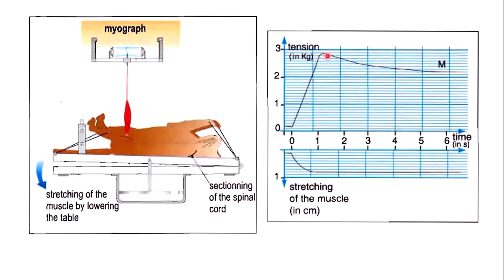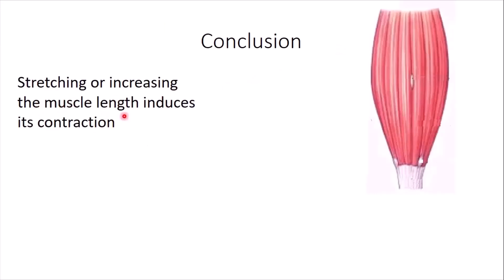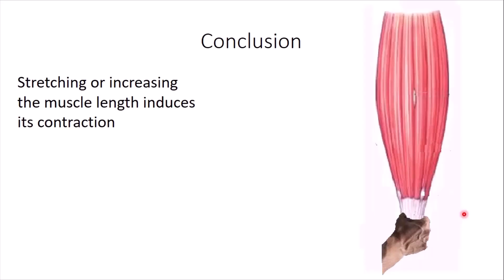Then it sort of attenuated a bit. It lowered or decreased slightly because of the adaptation that the sensory receptor experiences. But what we're seeing here is something very peculiar, very interesting. Stretching or increasing the muscle length actually induces its contraction. So if I were to grab the muscle from its tendon and pull it downward, the muscle length has increased. The muscle now responds by contracting and trying to pull its edges closer to each other, to shorten itself.